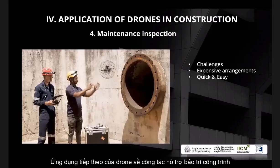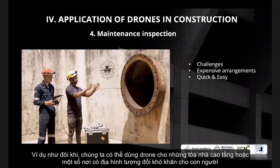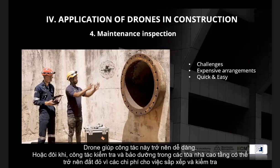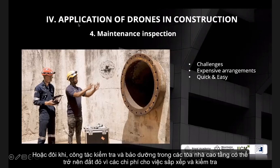We have maintenance and inspection. Sometimes there are high-rise buildings or sites which can be challenging for humans to access. For example, in the picture you can see there is a big pipe — for a human it's hard to go inside and do the inspection, but for a drone it's much easier. Also it can be expensive to arrange all the maintenance or inspection of high-rise structures, so drones really help us to do it quickly and easily.